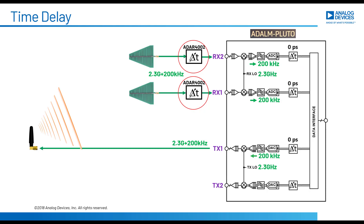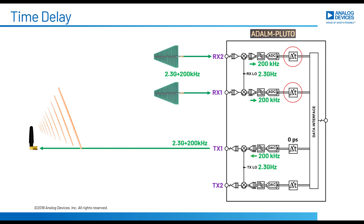If we put that delay in front of the mixer, which is analog beamforming, then the time delay we need to apply is just the time delay that we calculated earlier — 74.4 picoseconds for those particular conditions. And since we can't go backwards in time, we apply that delay to RX1, not RX2. This works great, and there are products out there like the ADAR-4002 that will do this for you very nicely. But we want to do digital beamforming, so we need to put the delay after the ADC.